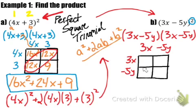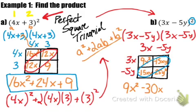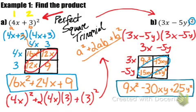Notice how we keep the negative 5y in our second box — keep the negative with it. Multiplying out each corresponding term: 3x times 3x gives 9x squared; 3x times negative 5y gives negative 15xy; negative 5y times 3x gives another negative 15xy; and negative 5y times negative 5y gives positive 25y squared. Combining like terms: 9x squared stays, the two negative 15xy terms combine to give negative 30xy, and we have positive 25y squared. That is our perfect square trinomial.